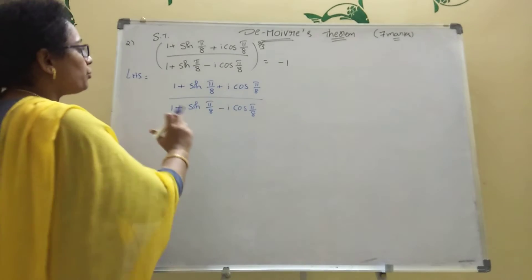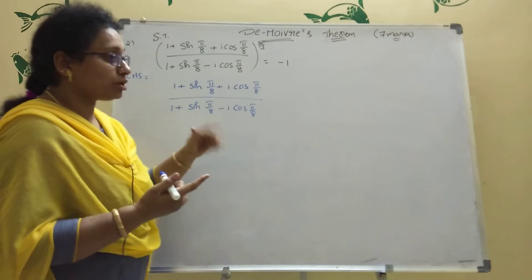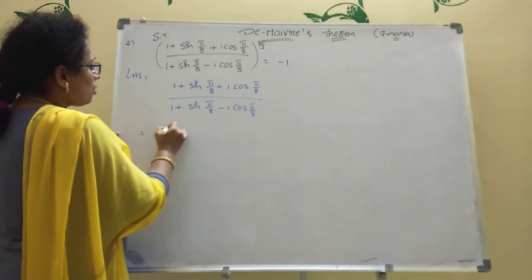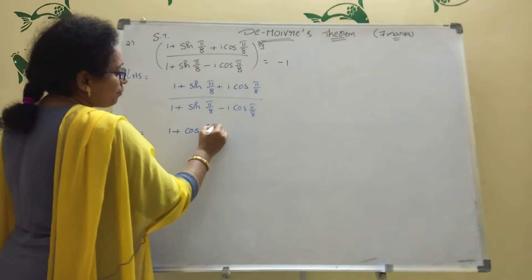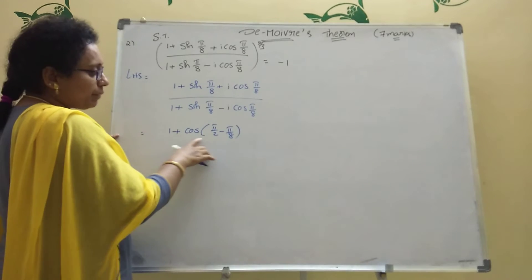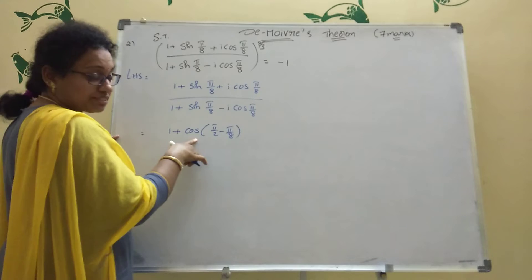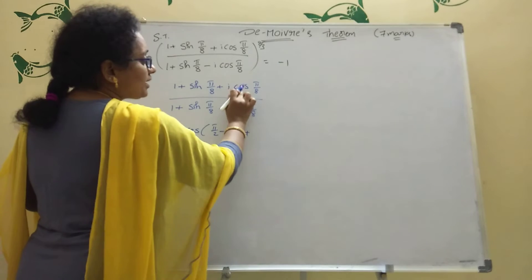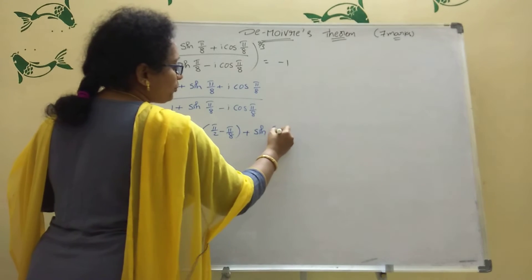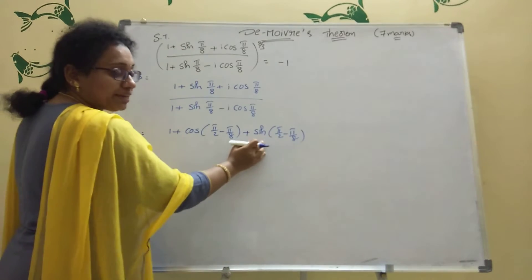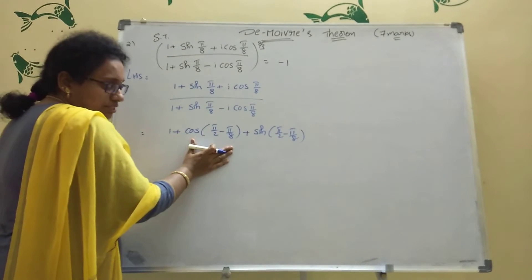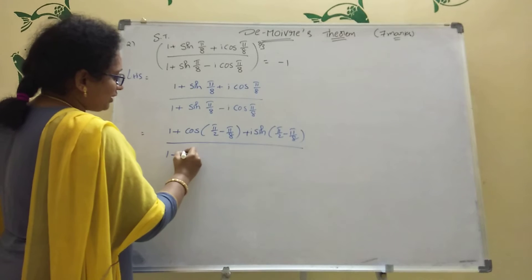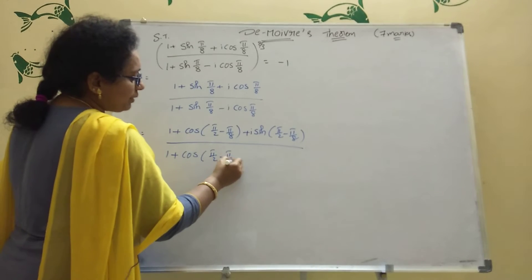We convert: sin(π/8) = cos(π/2 − π/8) and cos(π/8) = sin(π/2 − π/8). So the numerator becomes 1 + cos(π/2 − π/8) + i·sin(π/2 − π/8), and similarly the denominator: 1 + cos(π/2 − π/8) − i·sin(π/2 − π/8).